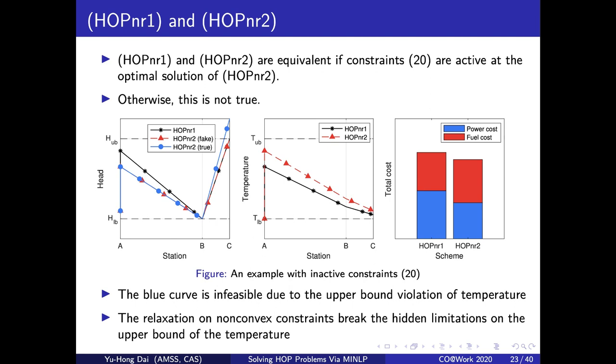The red curve is the optimal solution of HOPnr2. It is not the true status of oil head because we relax the friction calculation. So we can correct the solution of HOPnr2 to get the true head curve, which is represented as the blue curve. As you can see, the blue curve violates the upper bound of head. This is because the temperature in the solution of HOPnr2 is greater than the one in HOPnr1, which results in a smaller friction value. Also, we can conclude in this example that any solution of HOPnr2 with a greater temperature value than HOPnr1 will lead to an infeasible scheme. Something like this example happens because the relaxation on non-convex constraints break the hidden limitations on the upper bound of the temperature.